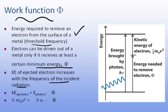On an energy level diagram, you can see that the energy brought by the photon — quantified as hν — is equal to the sum of the energy needed to remove the electron (the work function) plus the kinetic energy of the electron. Whatever extra energy exists beyond the work function is carried away as the kinetic energy of the electron.